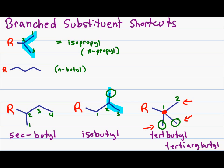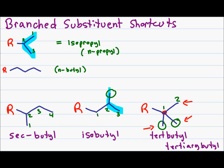Knowing these accepted abbreviations is very important to help you name molecules faster, and they will come up again and again in mechanisms throughout your organic chemistry course. If your molecule has multiple substituents in alphabetical order, you ignore sec or tert for butyl groups and follow b for alphabetical order. However for isopropyl you use the i rather than the p when alphabetizing.